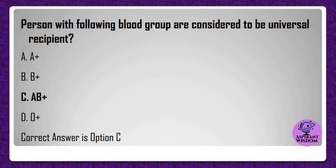Persons with which blood group are considered to be universal recipients? A) A and B, B) B and C, C) AB, D) O. Correct answer is option C.